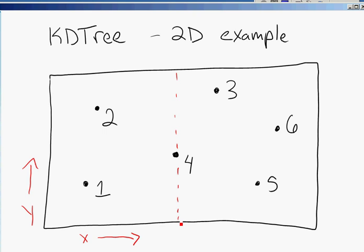So we split it, and now we have two separate classes of points. We've got 2 and 1 together, and 3, 5, and 6 are also together. Now, we've split on the X dimension, now the next dimension to split on would be Y.